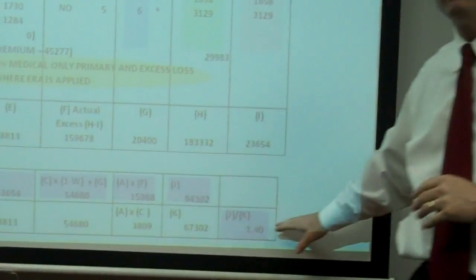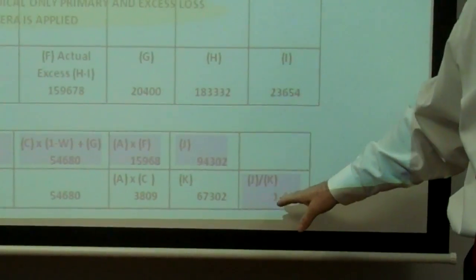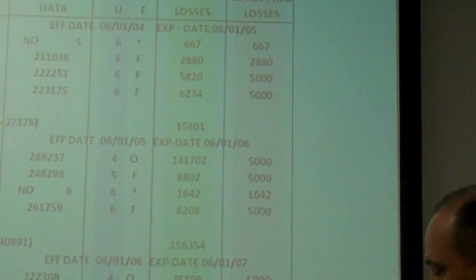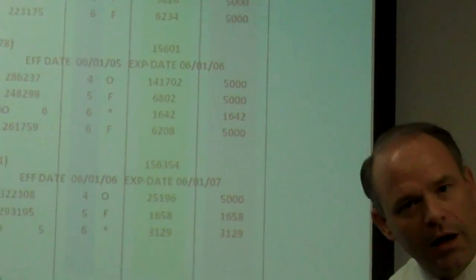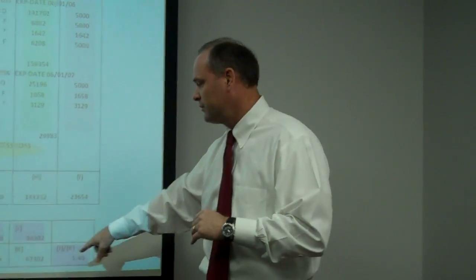This is the actual rating formula. It's just simple algebra right down here at the bottom. This box at the bottom is the rating formula. Everything else that you see above here are just numbers that flow into the formula. And that's where the change is coming on how this works.